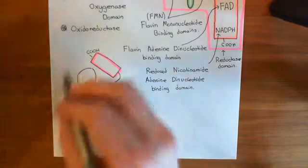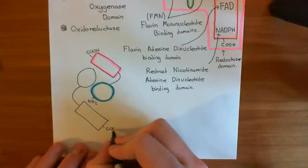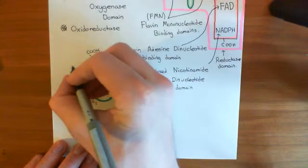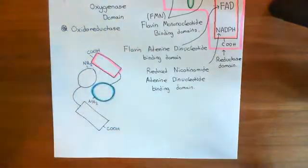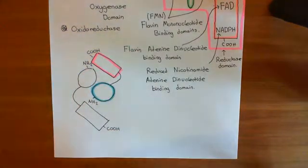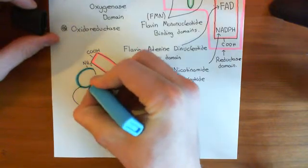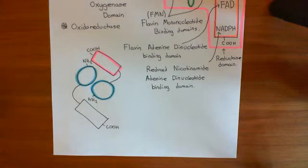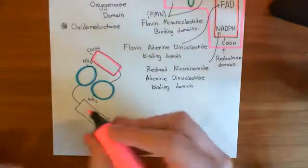So it forms a dimer like so, and this is the active enzyme now. Here is the carboxyl terminus, and here is the amino terminus over here. So this is the oxygenase domain of this second nitric oxide synthase protein, and in pink here is the reductase domain.